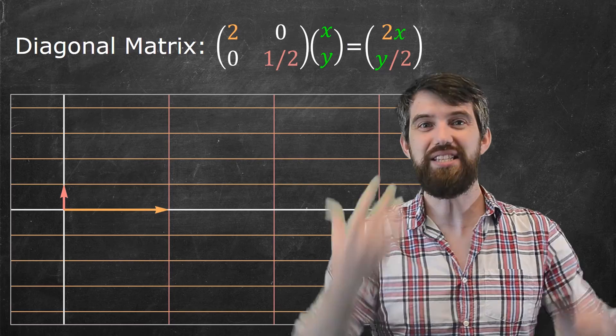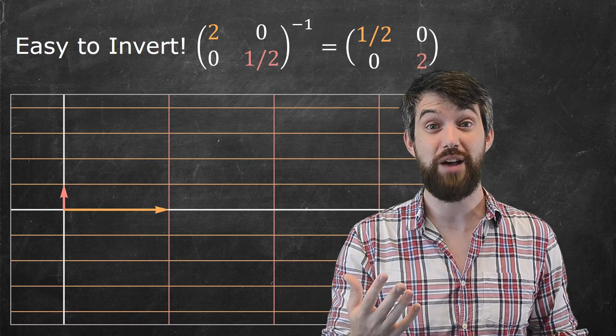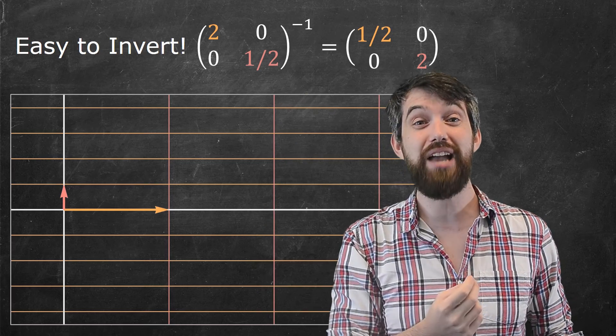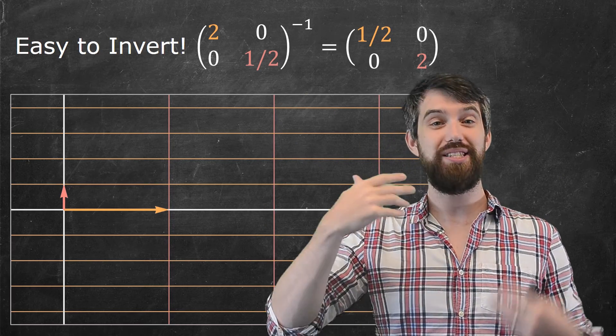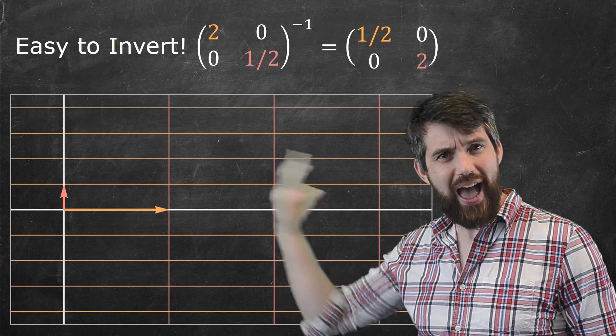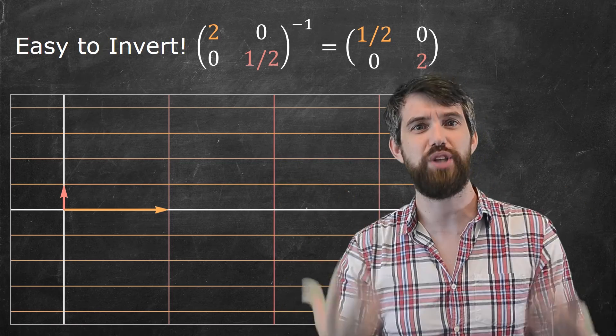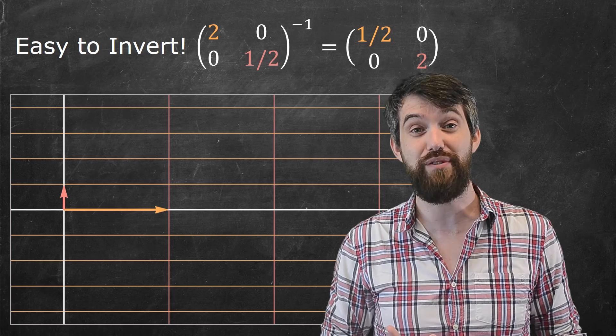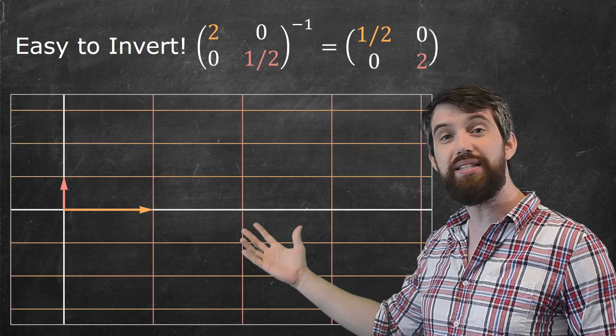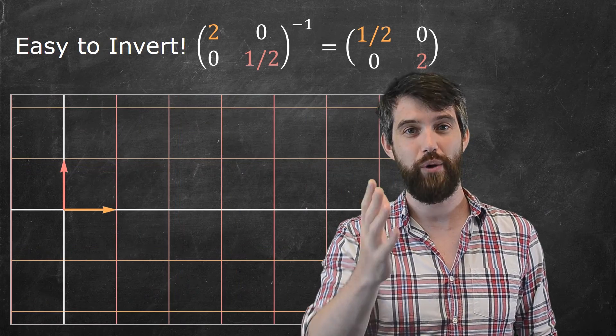And then, diagonal matrices are also nice because they're really easy to invert. For example, the inverse of that matrix is just taking all the things along the diagonal and taking 1 over them. So, this is the matrix 1 half, 0, 0, 2. And then, if I think about what that diagonal matrix does, well, it takes the horizontal parts and squishes it by this factor of half and it stretches by a factor of 2 the vertical parts and we get something like this, taking it back exactly where we began.